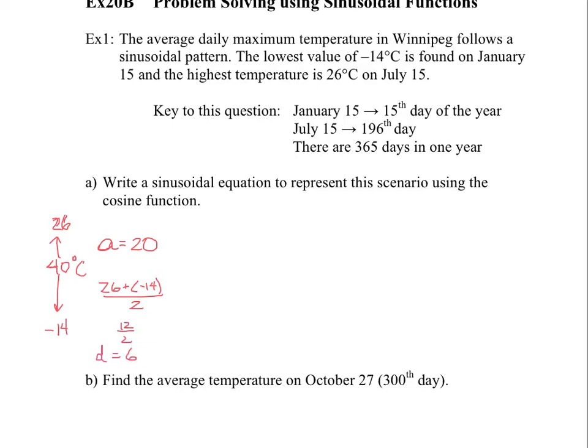So basically, the average temperature throughout the whole year, our central axis, would be the midpoint between 26 and negative 14. So again, if you want to calculate that, you could simply go 26 plus negative 14 divided by 2.